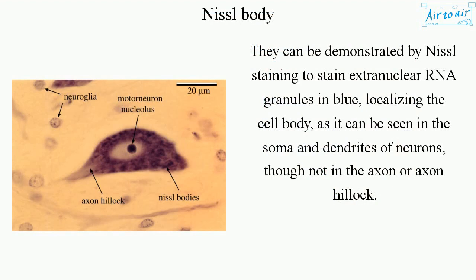They can be demonstrated by NISSL staining to stain extra nuclear RNA granules in blue, localizing the cell body, as it can be seen in the soma and dendrites of neurons, though not in the axon or axon hillock.